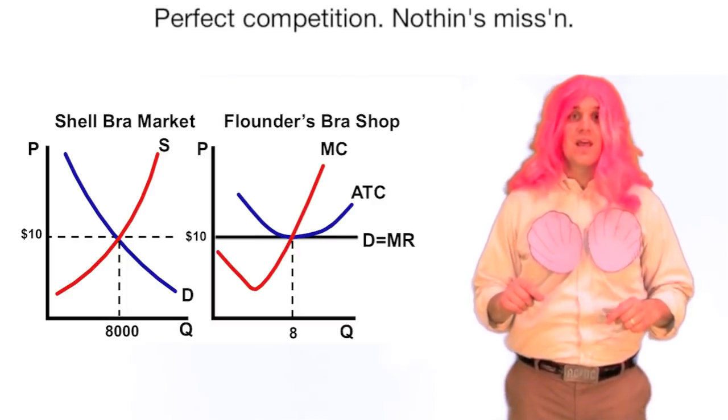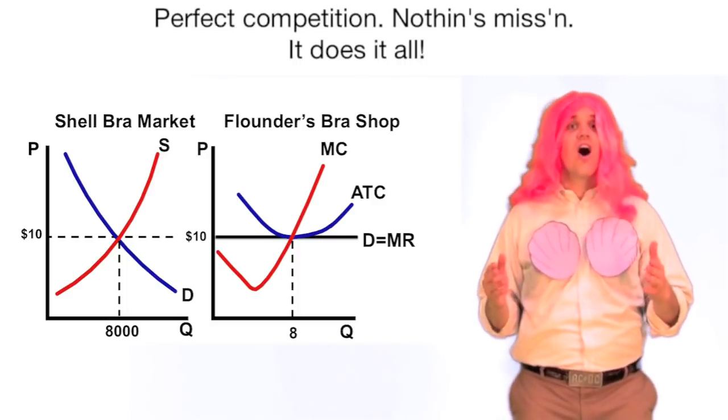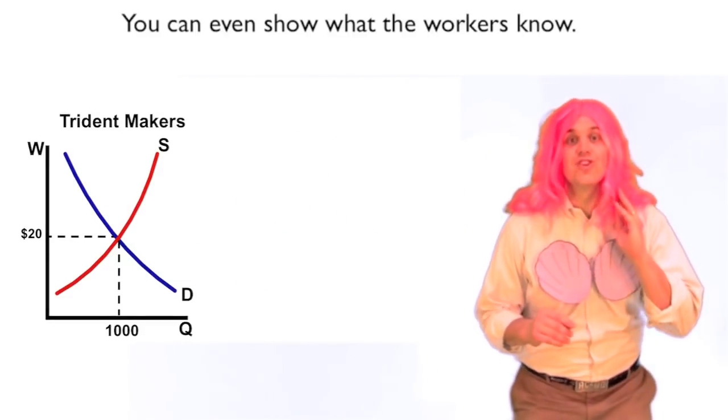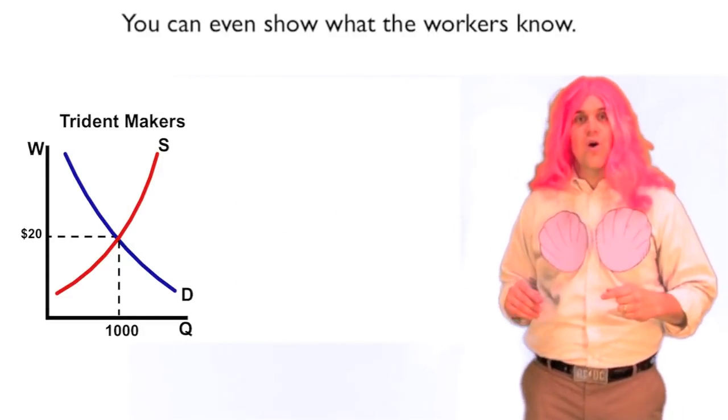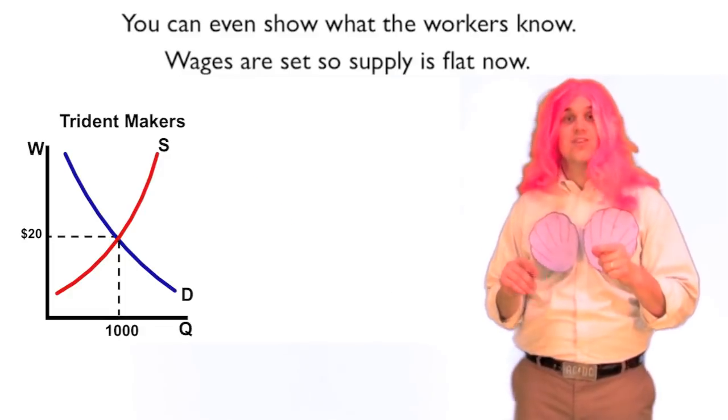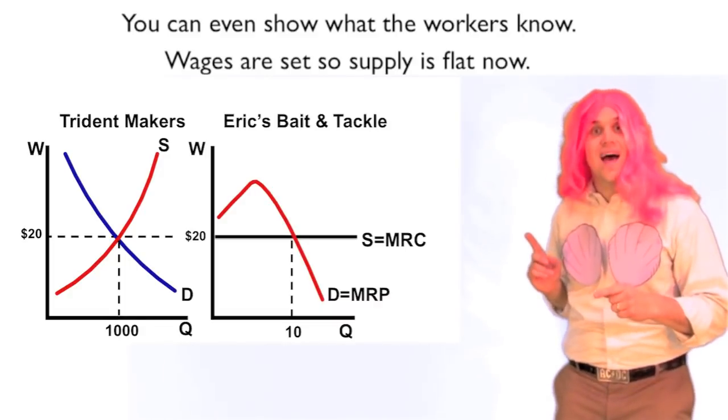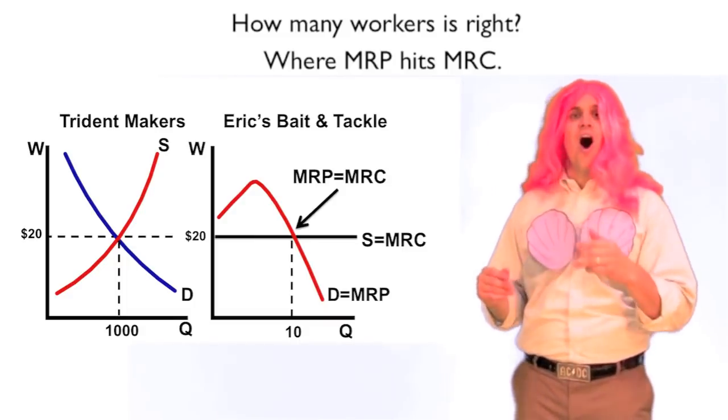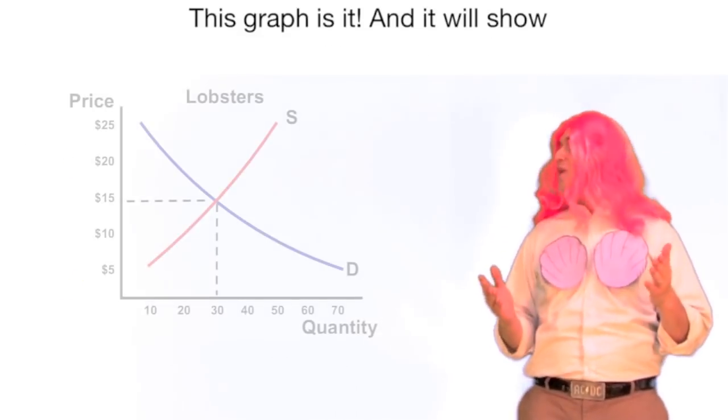Nothing's missing. It does it all. You can even show what the workers know. Wages are set so supply is flat now. How many workers where MRP hits MRC.